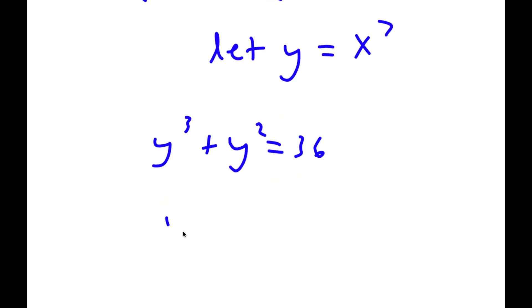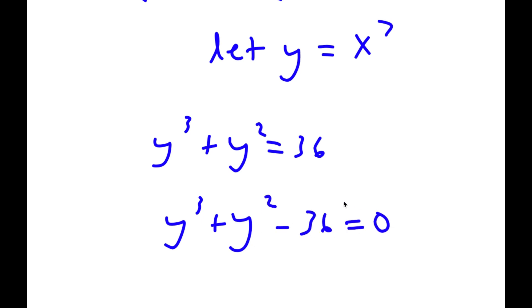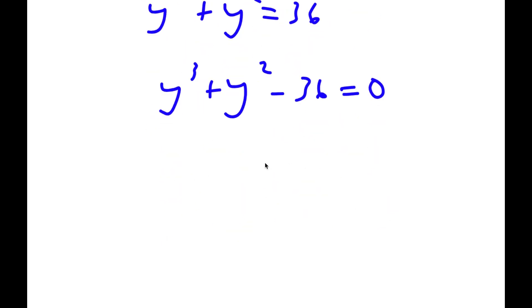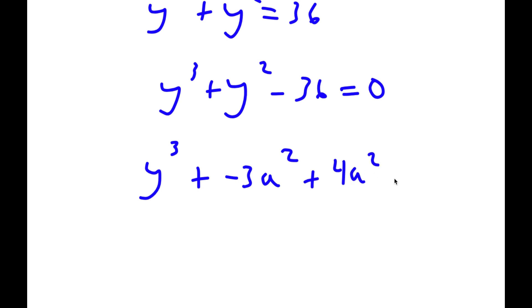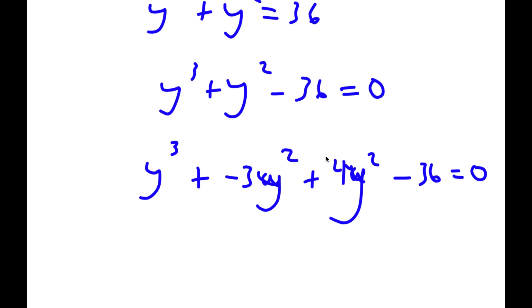If I subtract 36 on both sides, I get y to the power of 3 plus y to the power of 2 minus 36 is equal to 0. To solve this, I'm going to rewrite y squared as negative 3y squared plus 4y squared. So I have y to the power of 3 minus 3y squared plus 4y squared minus 36 is equal to 0.